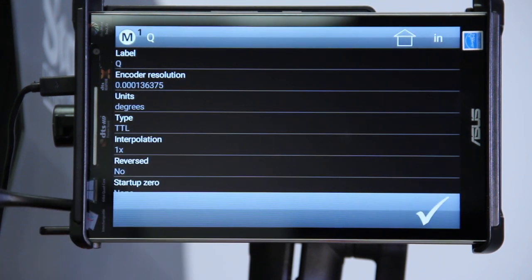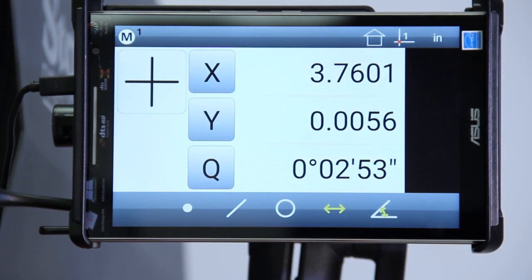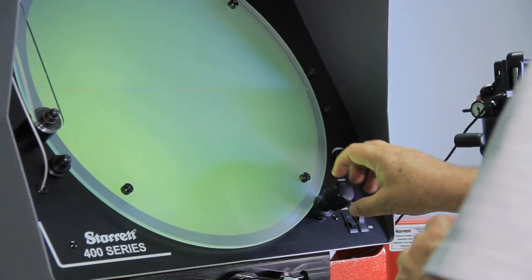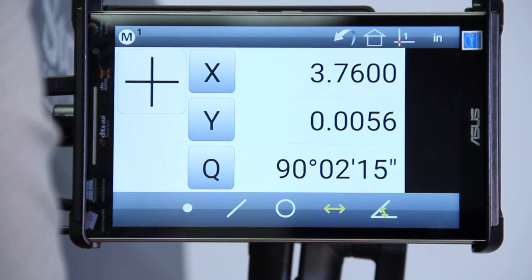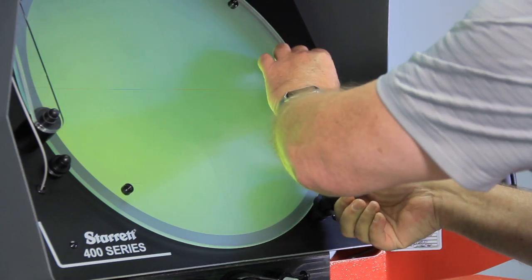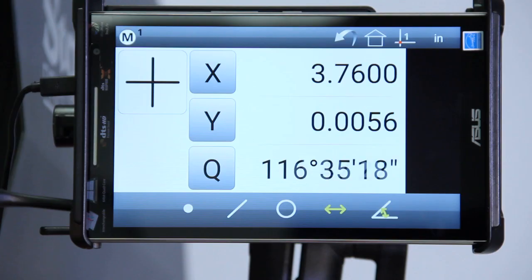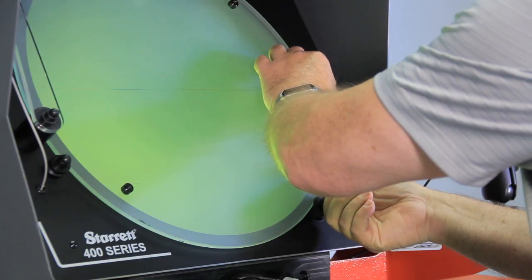You can hit the arrow in the bottom right hand corner a couple times to get out of that. And at that point, you can then hit the Q axis. Zero it. Rotate it 90 degrees. Check your 90 degree. Check your 180. Make sure that you're within two minutes. Make sure everything's working there.